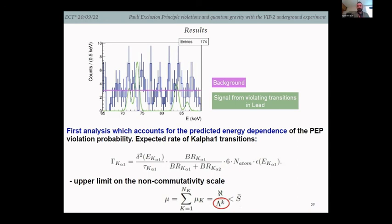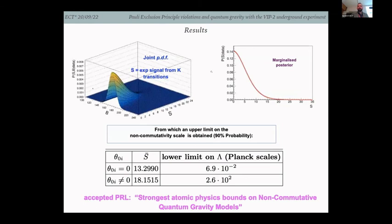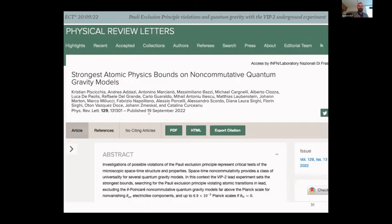These are the results: the marginalized posterior and the two-dimensional posterior of background and signal. Since there is no evidence of such a signal, a 90% probability exclusion limit is placed, which translates to a limit on lambda in units of Planck scale. This has been accepted in PLB, and very recent news — published yesterday — congratulations to Christian, Andrea, and Antonino, the main authors.